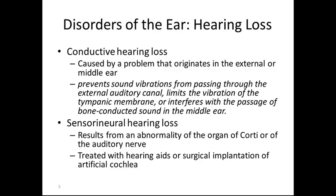Sensorineural hearing loss results from an abnormality in the organ of Corti or of the auditory nerve. It is treated with hearing aids and surgical implantation of an artificial cochlea.